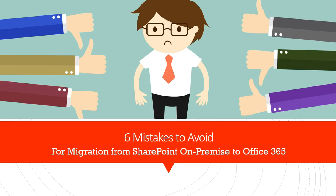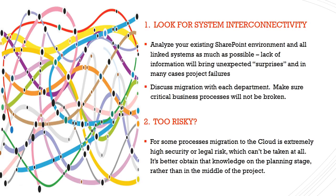6 Mistakes to Avoid for Migration from SharePoint on-premise to Office 365. First, look for system interconnectivity. Analyze your existing SharePoint environment and all linked systems as much as possible. Lack of information will bring unexpected surprises and in many cases project failures. Discuss migration with each department, making sure critical business processes will not be broken. For some processes, migration to the cloud is extremely high security or legal risk, which can't be taken at all. It's better to obtain that knowledge in the planning stage rather than in the middle of the project.